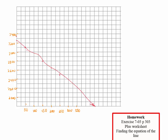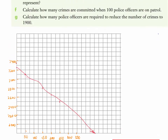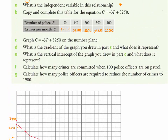The graph should have labeled axes. The vertical intercept occurs when p equals zero and equals 3250, which represents the number of crimes committed when there are no police officers. For part f, to calculate crimes when 100 officers are on patrol, we substitute into the equation: negative 3 times 100 plus 3250 and work out the result.